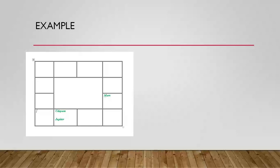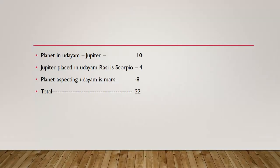The next question is: at what depth? You need knowledge of the area, because in some places they get water at 20,000 feet and in others at 200 feet. The question is whether you will get it at 15,000, 17,000, or 25,000 — that is where Jamakol helps. For example: the planet in udayim is Jupiter giving 10 rays, the udayim rashi is Scorpio giving 4 rays, and the aspecting planet is Mars giving 8 rays — totally 22 rays. So if the locality range is 100 to 1,000 feet, you can say they will get water at around 220 feet.